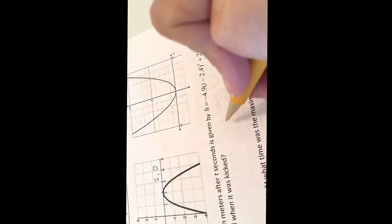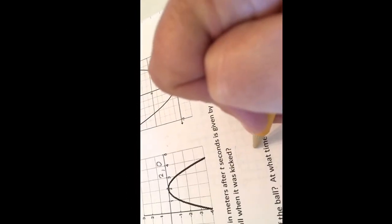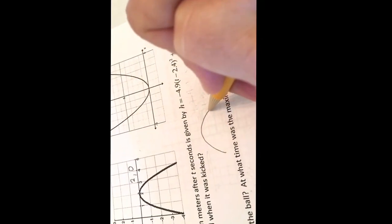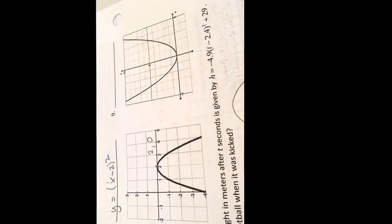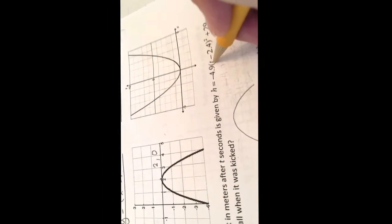Now, when we come down here to our word problem, think about a football that's being kicked in the air. It's going to go up and it's going to come down. Does it look like our parabola? Yes, it does. When the football is first kicked, it was on the ground. The height was 0.